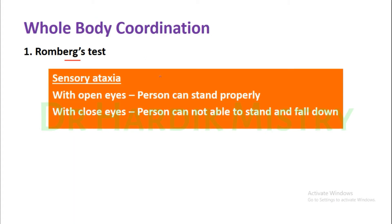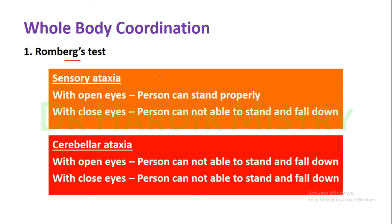There are two abnormal findings. The first is ataxia — it is the lack of coordination. Whenever there is a lack of coordination, the condition is known as ataxia. Ataxia is of two types: sensory ataxia and cerebellar ataxia. Now, how do we differentiate between sensory ataxia and cerebellar ataxia?